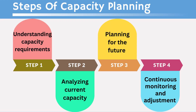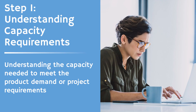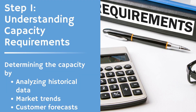Here are some steps to achieve good capacity planning. We will go through one by one in detail. The first step in capacity planning is understanding capacity requirements. This involves determining the capacity needed to meet product demand or project requirements. By analyzing historical data, market trends, and customer forecasts, you can accurately assess the resources required to fulfill future demand.